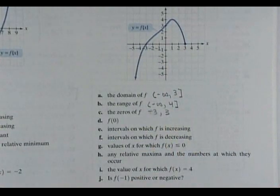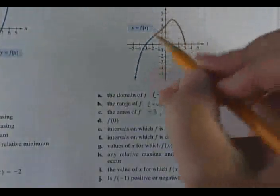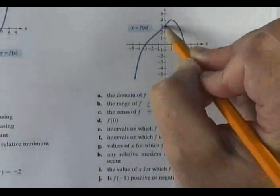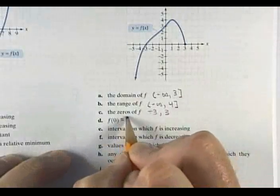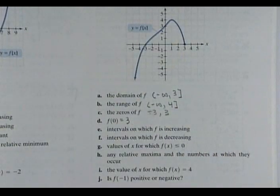F of zero. F of zero means when x is zero, what's your y value? Well, when x is zero, what is your y value? Three. So F of zero equals three. Does everybody agree here?